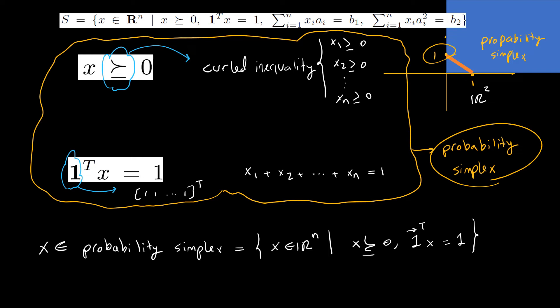If we add components of x that is inside the probability simplex, it sums up to one. Note that all components are greater or equal than zero.